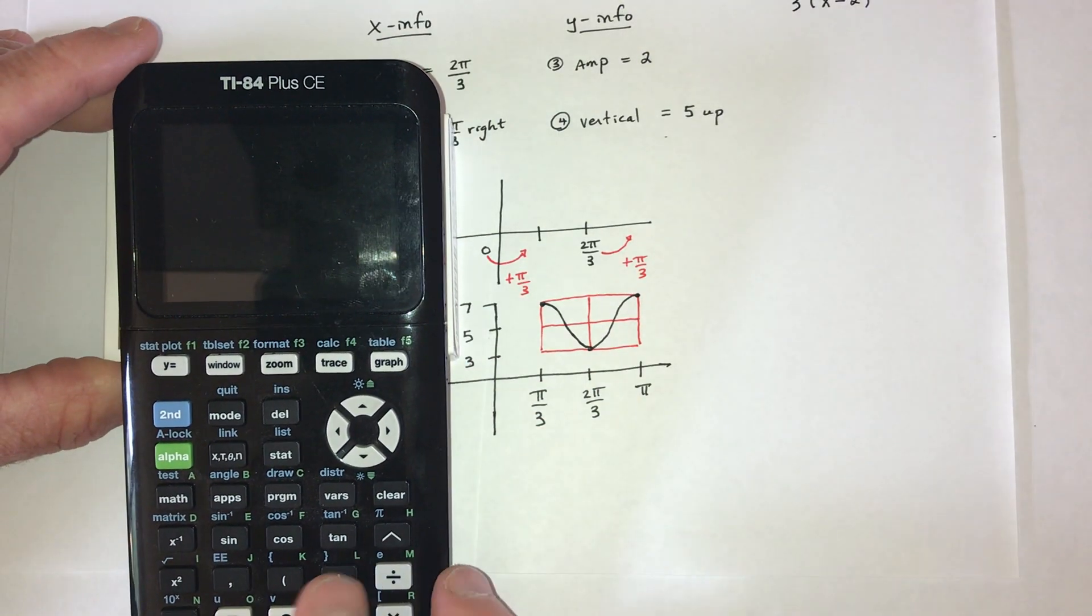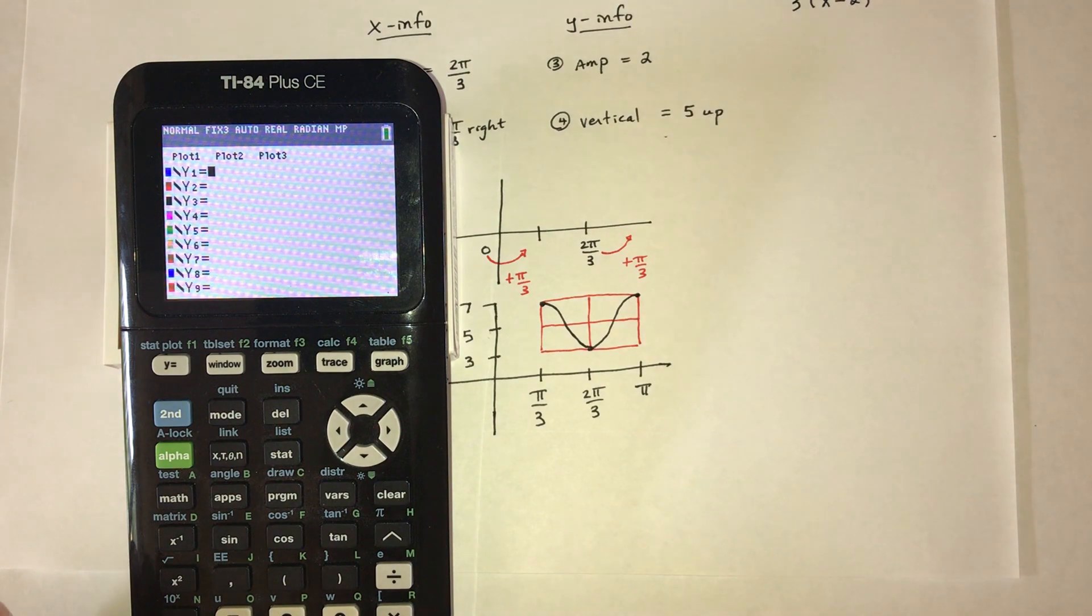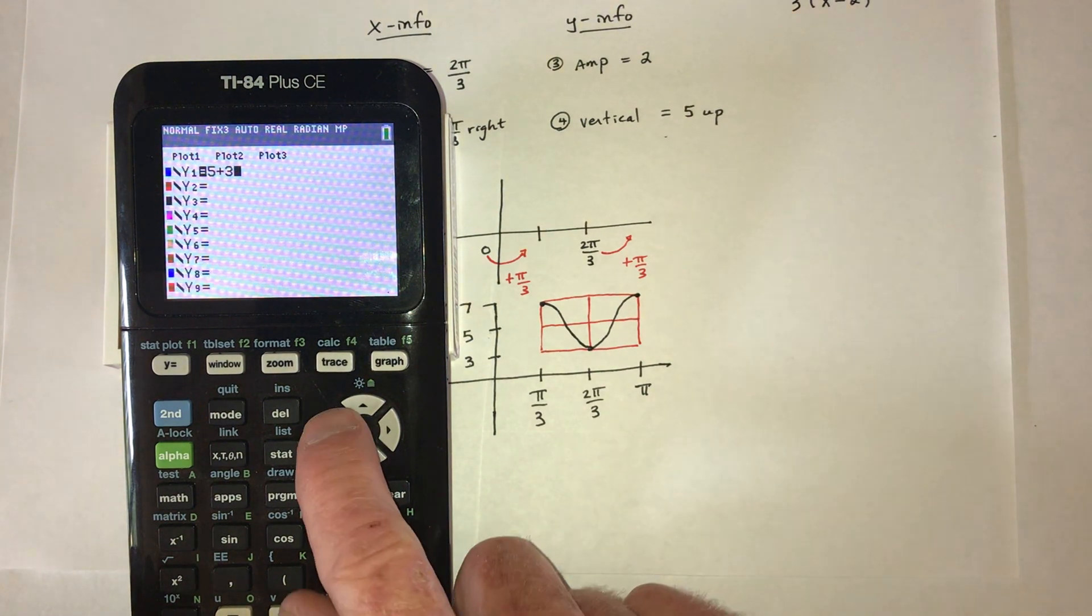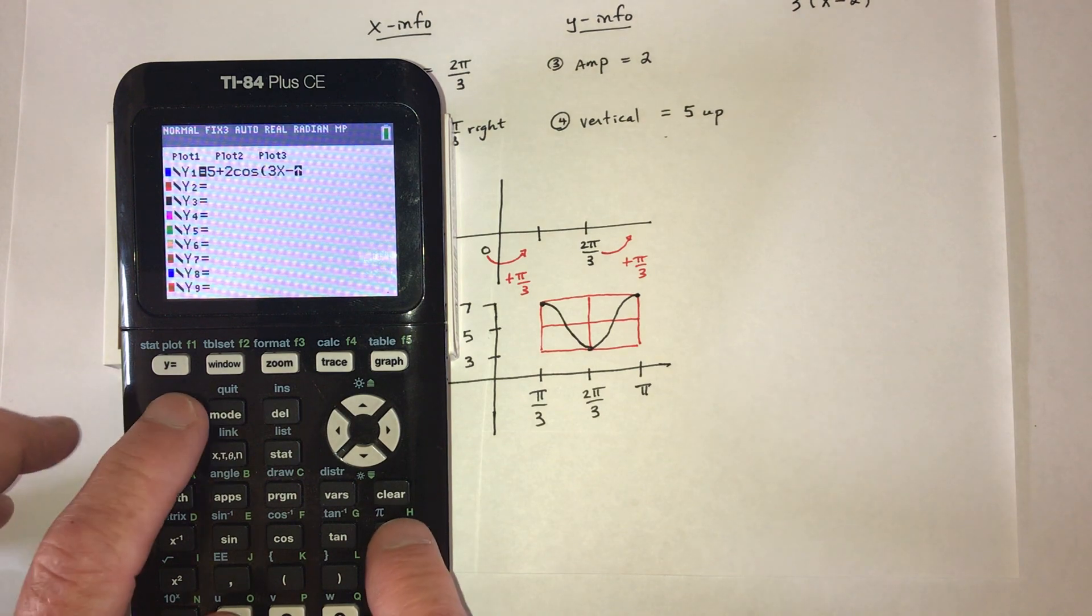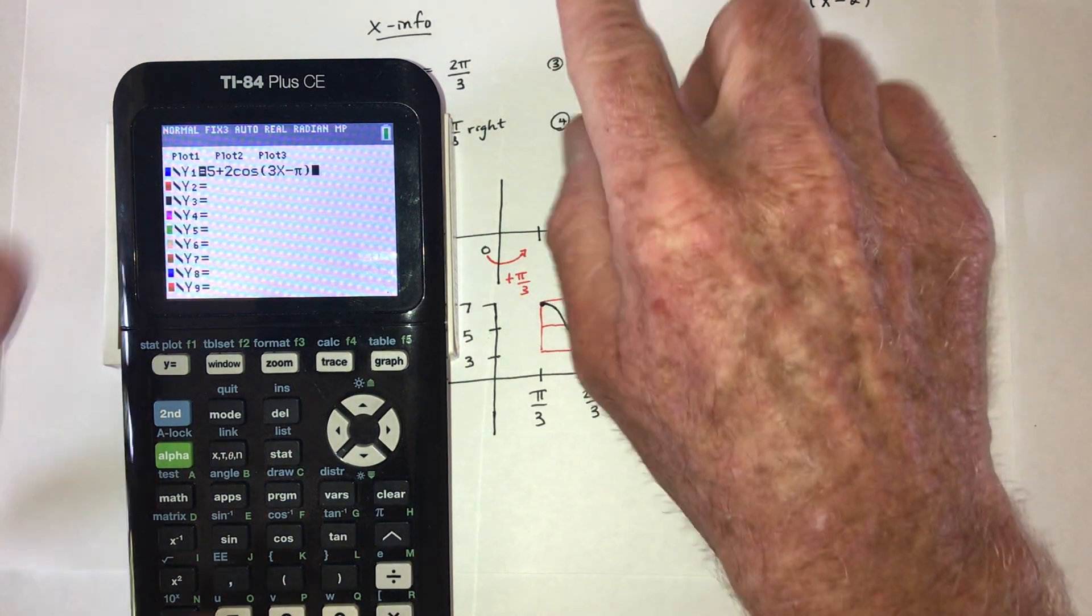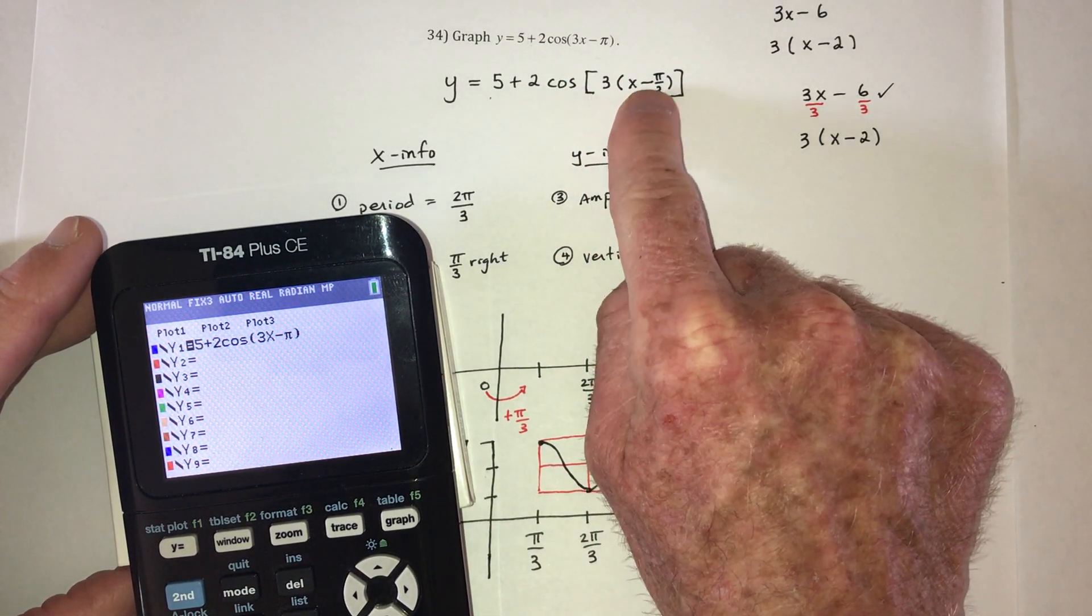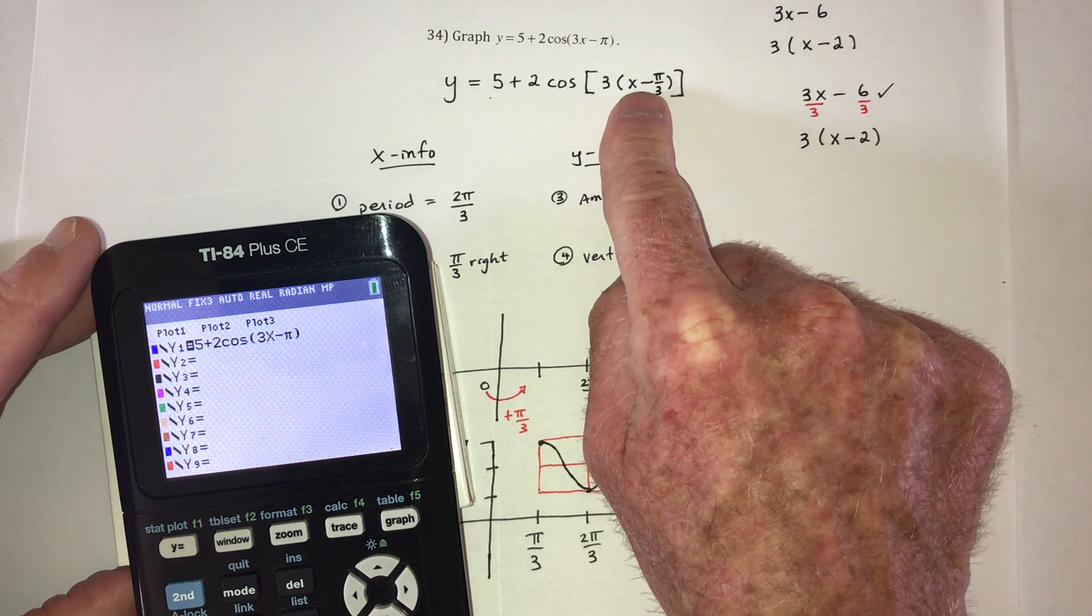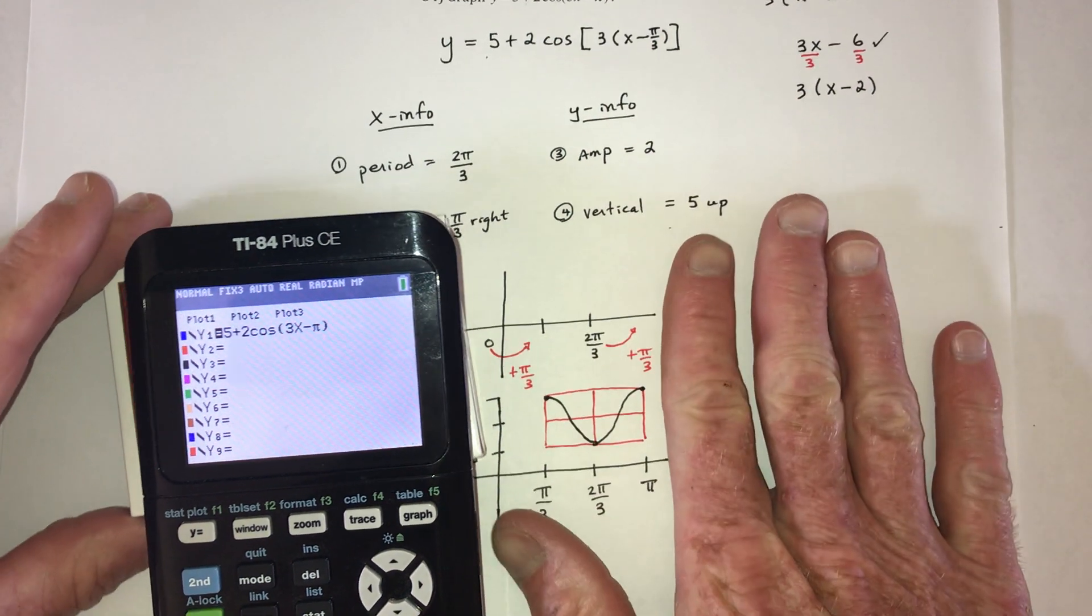Of course, we should ask our little friend, the graphing calculator, what they think. Oh, that's supposed to be a 2. 5 plus 2 cosine, and then 3x minus π. Whenever you go to check your answer, always graph the original problem the way that it was given. Not this, because if I made a mistake right there, I would be graphing my mistake instead of graphing the original problem. So graph the original.